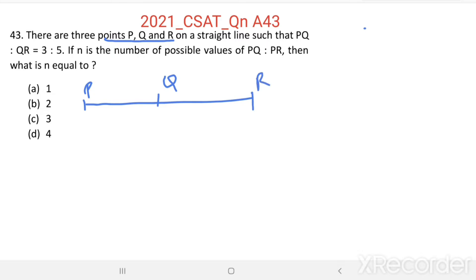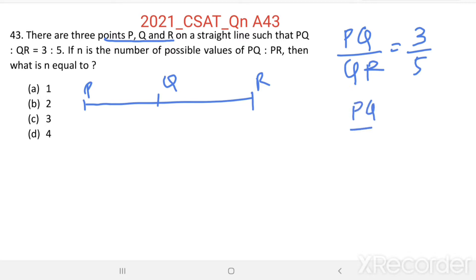Such that PQ to QR equals 3 to 5 — that means the length of PQ to the length of QR equals 3 by 5. If n is the number of possible values of PQ by PR, then what is n equal to? Here they are asking how many values can PQ by PR take.